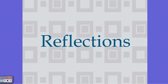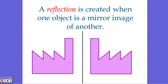Today we're going to talk about the next item on our transformations list called Reflections. Have your notebooks handy — you need to write some stuff down. A reflection, instead of being a slide, is created when one object is a mirror image of the other. Another word for reflection is also a flip, but basically they're mirror images of one another.